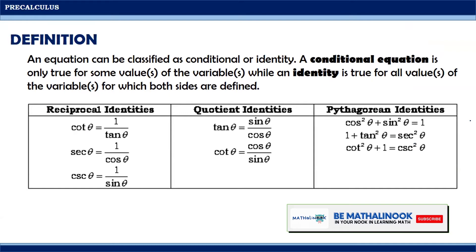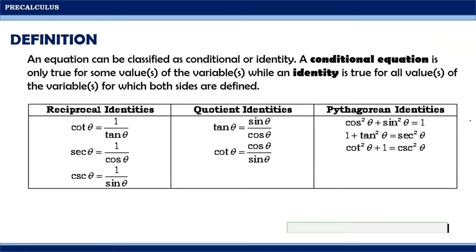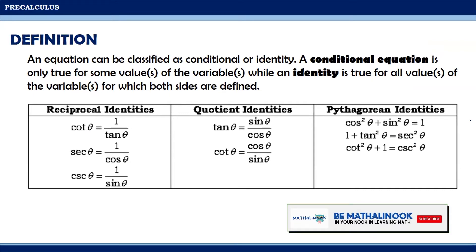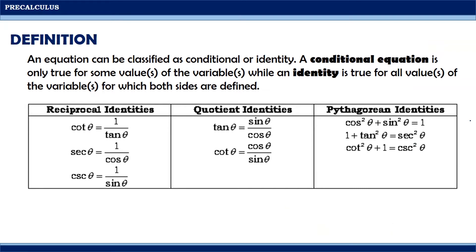we determined the 8 fundamental trigonometric identities, divided into 3 subgroups: reciprocal identities, quotient identities, and Pythagorean identities. The reciprocal identities are: cotangent theta equals 1 over tangent theta, secant theta equals 1 over cosine theta, and cosecant theta equals 1 over sine theta.